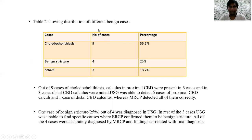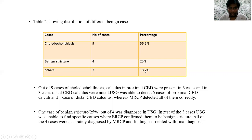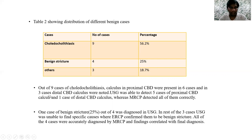Table 2 shows the distribution of different benign cases. Choledocholithiasis was the most common benign finding, seen in 56.2%, followed by benign stricture in 25% of cases, and other cases in 18.7%. Out of 9 cases of choledocholithiasis, calculi in the proximal CBD were present in 6 cases and in 3 cases, distal CBD calculi were noted. USG was able to detect 5 cases of proximal CBD calculi and 1 case of distal CBD calculi, whereas MRCP detected all of them correctly.